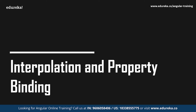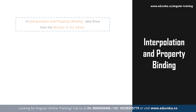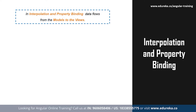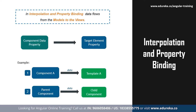In one-way data binding, data flows only in one direction, that is from the models to the views. As mentioned earlier, one-way data binding in Angular can be of three types: interpolation, property binding, and event binding. Interpolation binding is used to return HTML output from TypeScript code, that is from the components to the views. The template expression is specified within double curly braces. Through interpolation, strings can be added into text between HTML element tags and within attribute assignments. These strings are calculated using template expressions.